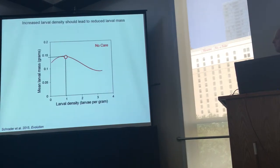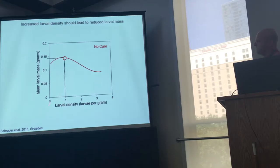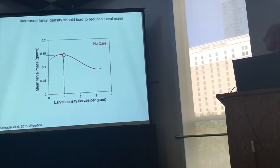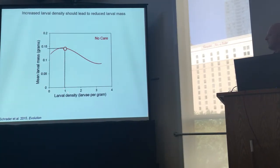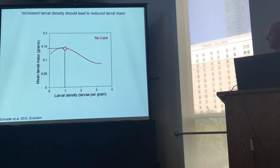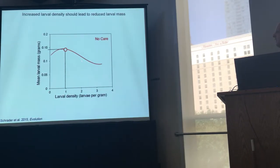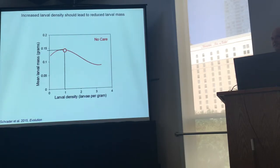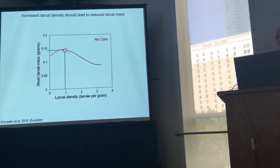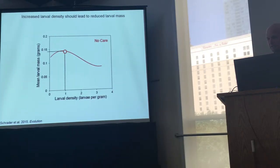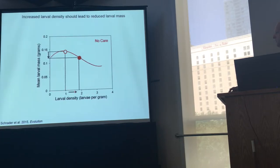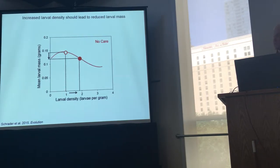In a paper we published last year, we found that the relationship between mean larval mass and larval density in the no-care environment is a strange hump-shaped relationship. The important thing for this talk is that at densities between one and two larvae per gram, we should see a decline in larval mass as density shifts that way. Since we've been seeing density increase in the no-care line, we actually expect to see a phenotypic change in larval mass tracking this — driven by the fact that there are more larvae competing for resources on the carcass. So as we shift from a density of around one in generation one to almost two in generation 13, we should see this decline.